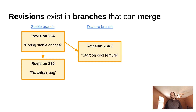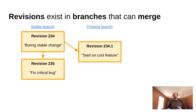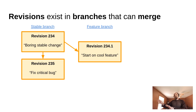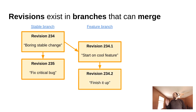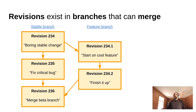Imagine you didn't have version control, or if you had started working on this in your stable branch rather than a feature branch. How would you get this critical bug fix to your players if you had already started working on this feature? You'd have to either push this half-broken feature out to your users along with the critical bug fix, or try to turn it off or hide it. But with version control, you can have this cool new feature off in a separate branch, fix the critical issue in your stable branch, and later come back to your feature branch, finish it up, and merge that back into the stable branch. Branches and merging are a super powerful tool we'll be talking about a lot more later.